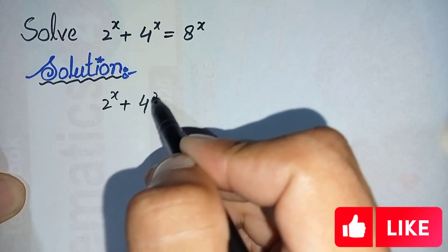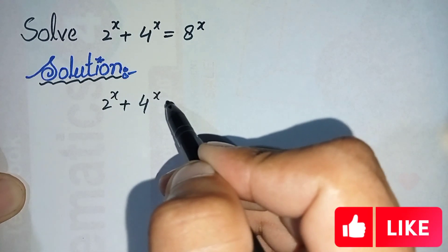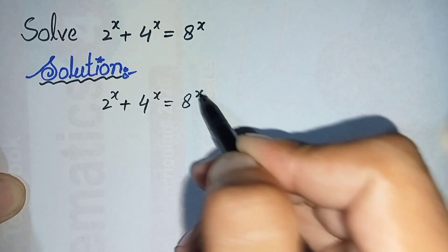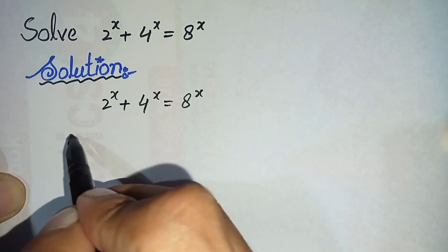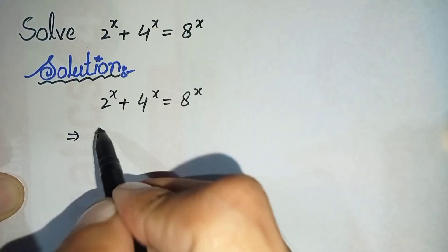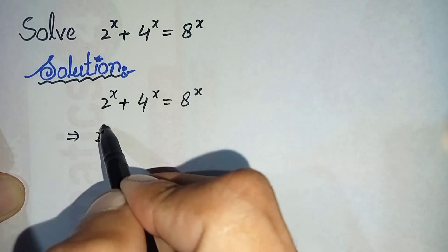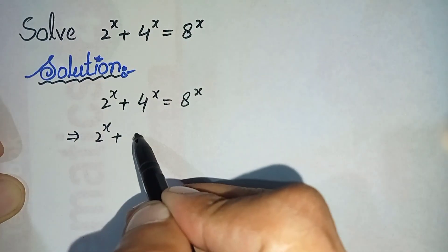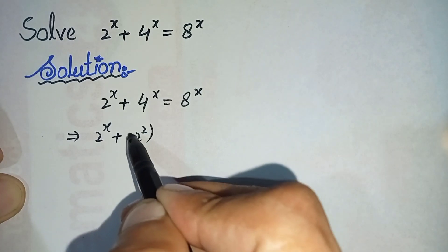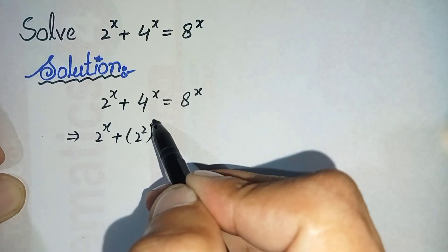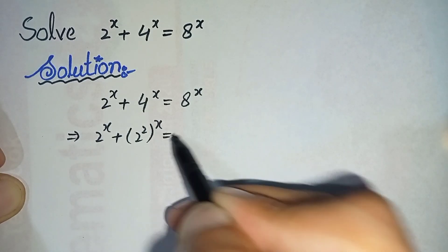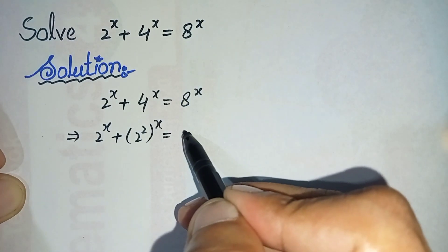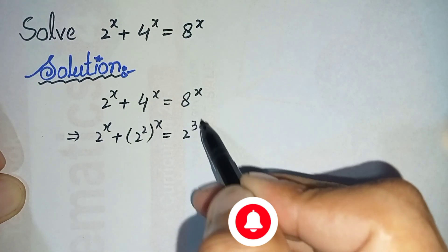The question is: 2 raised to power x plus 4 raised to power x is equal to 8 raised to power x. Next, we can write 4 as 2 raised to power 2, whole raised to power x, and 8 as 2 raised to power 3, whole raised to power x.